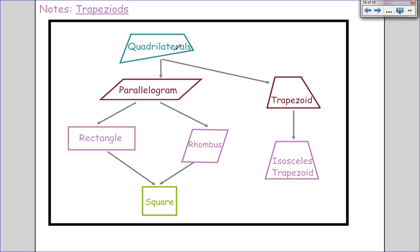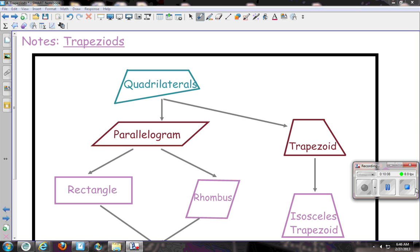Here's a little diagram. We have our quadrilaterals. Trapezoids break off—they're not part of the parallelogram family. And isosceles trapezoids are part of the trapezoid family. Please do your homework and get some good practice, and have a great day.